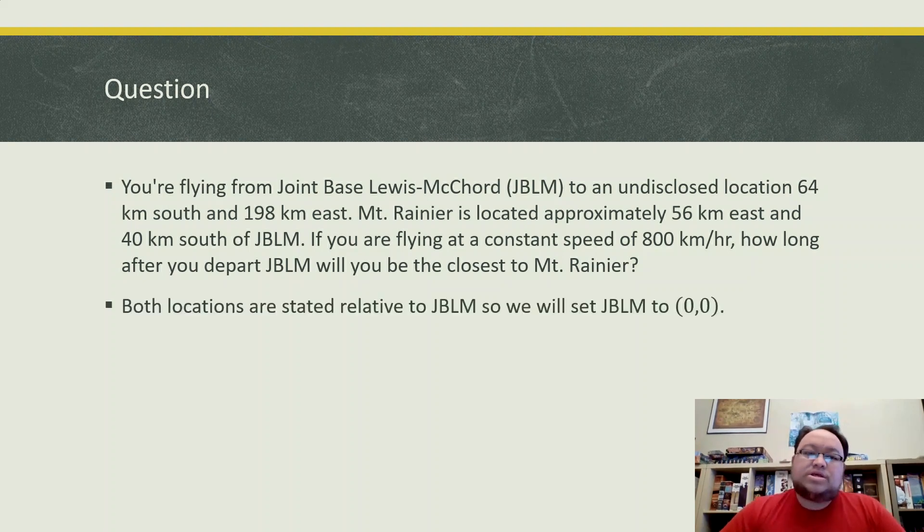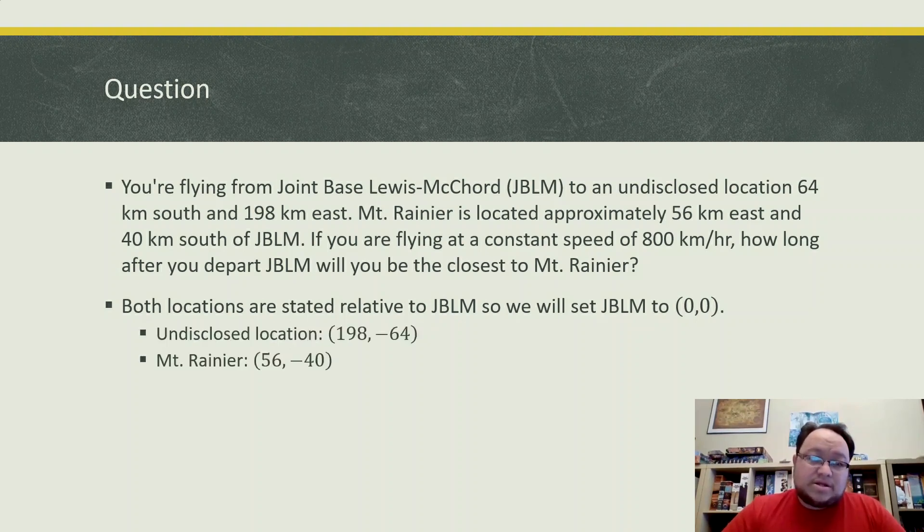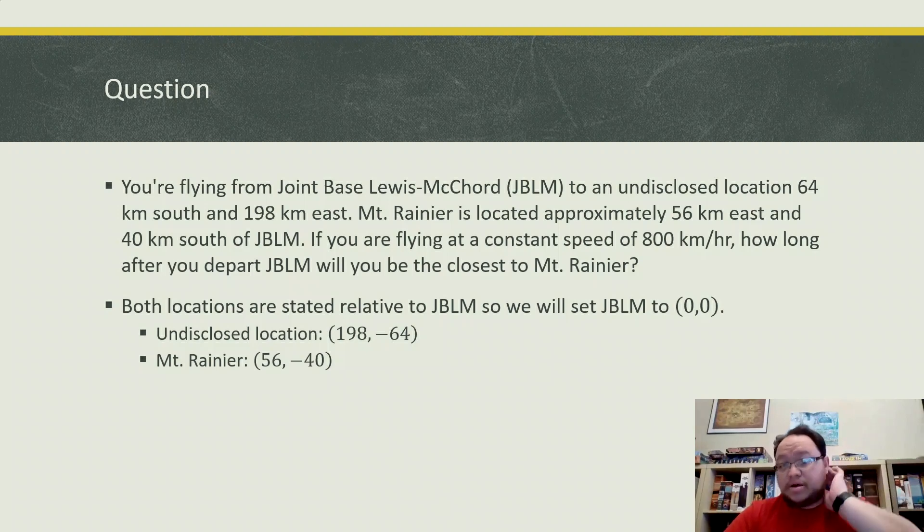Since both locations are relative to JBLM where we're starting, we're going to set that to our origin. And that means our undisclosed location, our destination if you would, is going to be at 198 and negative 64 to represent east and south accordingly on a coordinate plane. And Mount Rainier would also have that similar reasoning where it would be at 56 and negative 40.